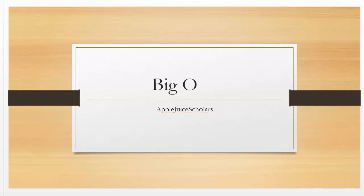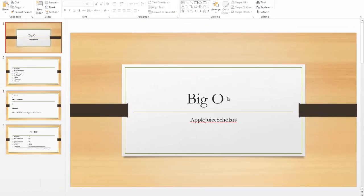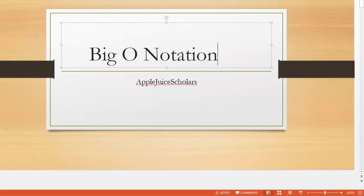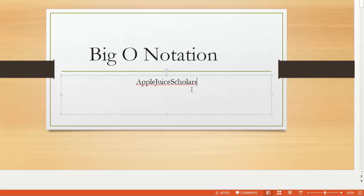Today I want to talk about Big O Notation. What Big O Notation is, is how efficiently something runs in its worst case.